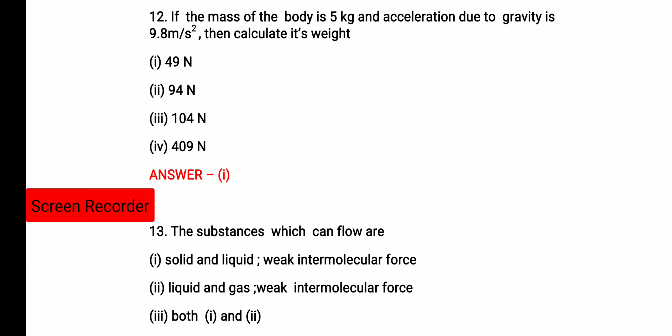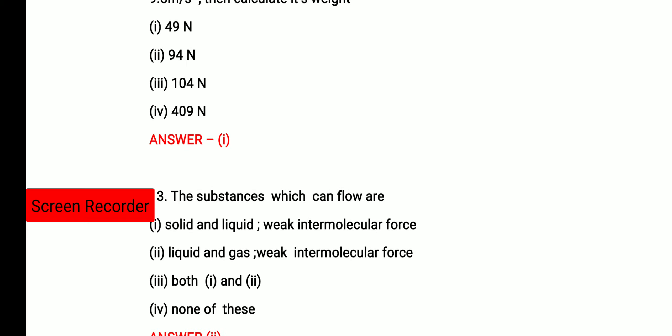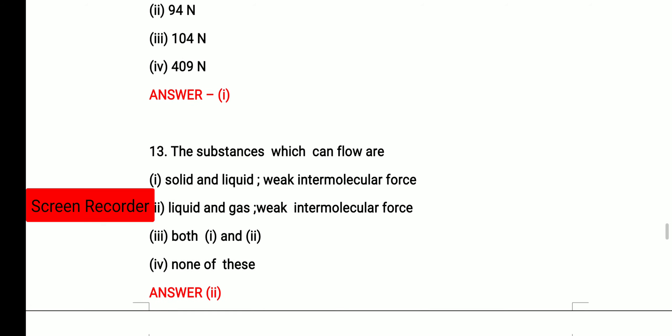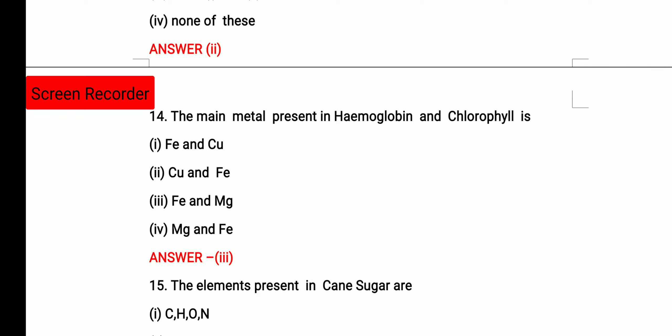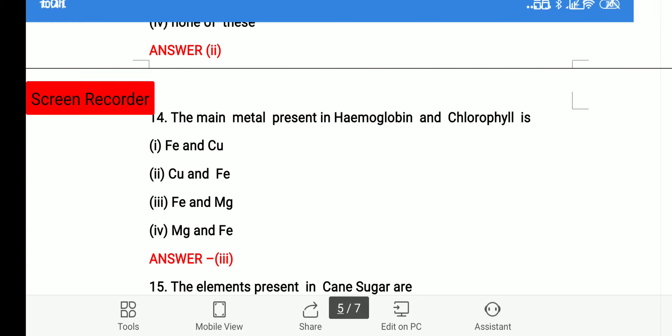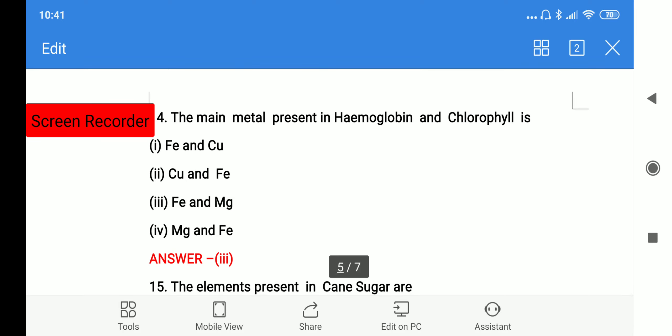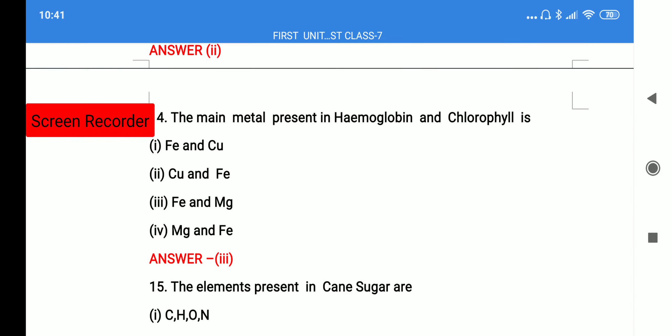The substance which can flow, that is solid and liquid, liquid and gas. So first of all, you have to identify that which can flow, liquid and gas can flow. And why they can flow? Because there is the weak intermolecular force of attraction. So option 2 is the correct answer. Next question, the main metal present in hemoglobin and chlorophyll. The main metal present in hemoglobin is iron and in chlorophyll it is magnesium. In hemoglobin there is iron and in chlorophyll there is magnesium, so option 3 is correct.